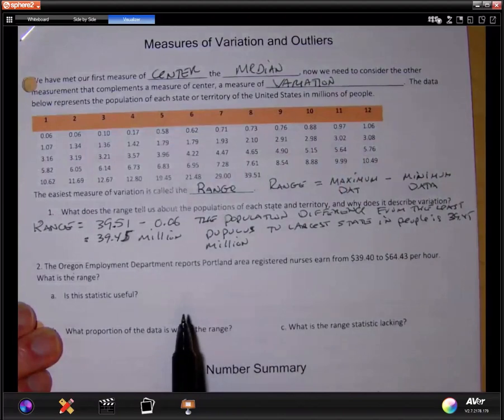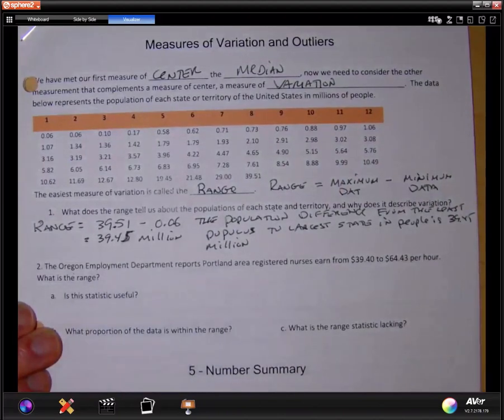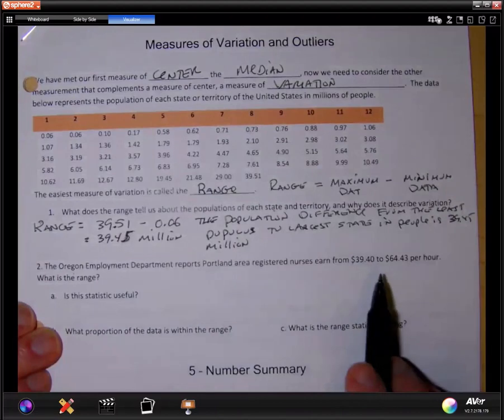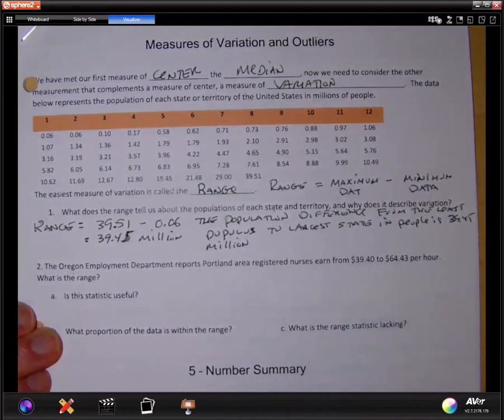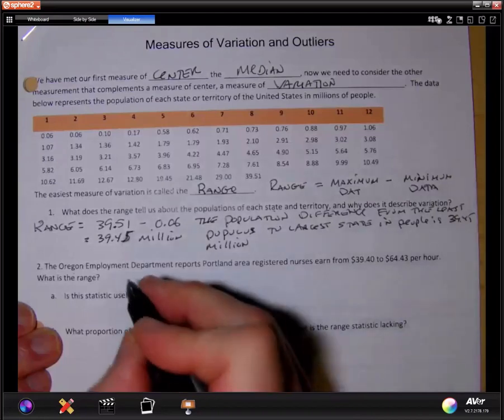Is this statistic useful? Well, let me ask you. The Oregon Employment Department reports Portland area registered nurses earn from $39.40 an hour to $64.43 per hour. What is the range?